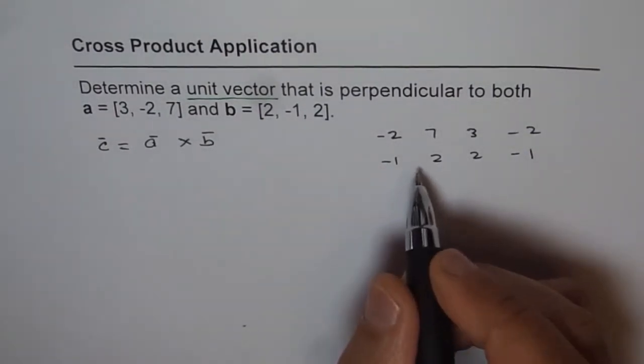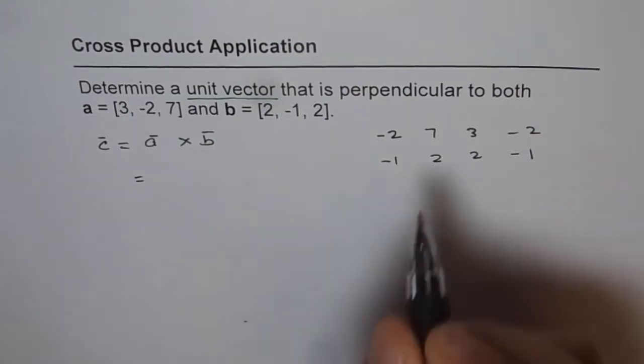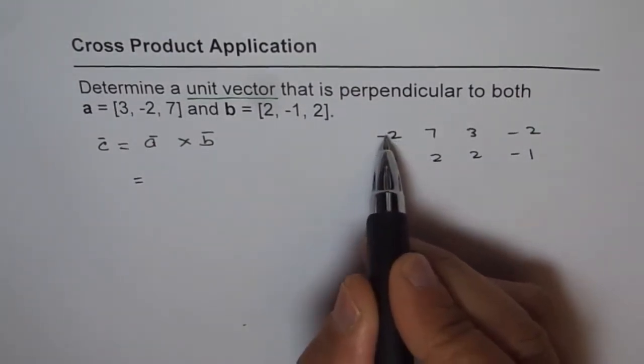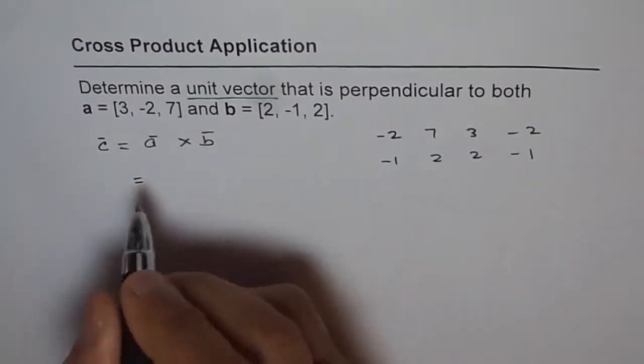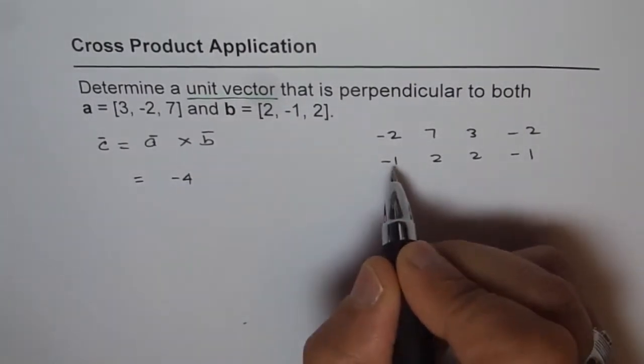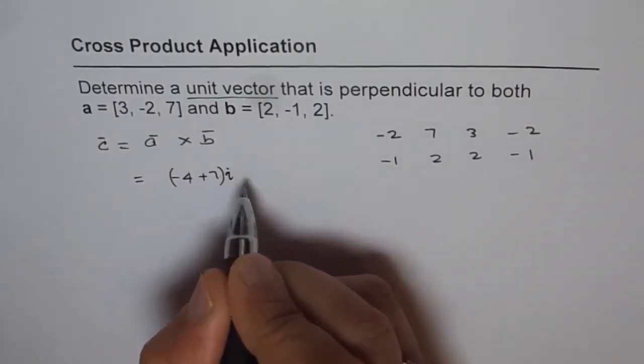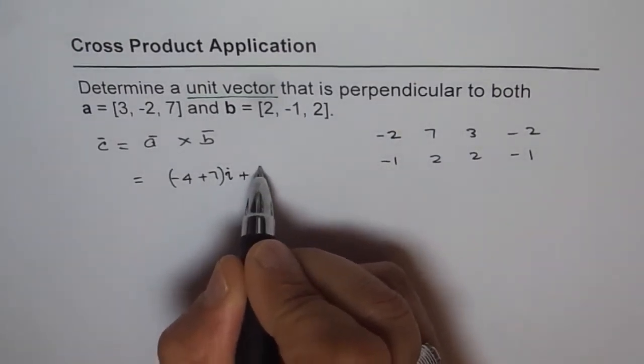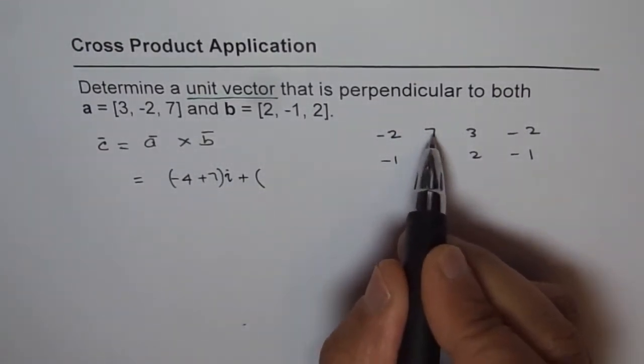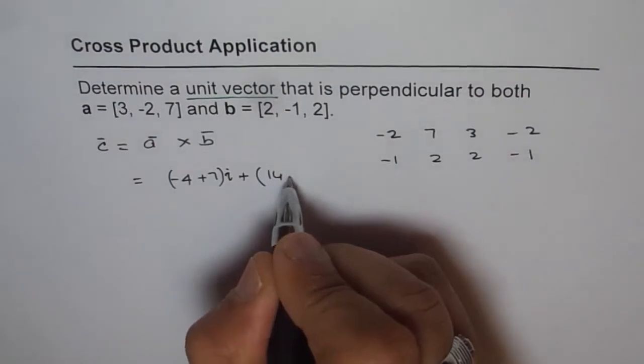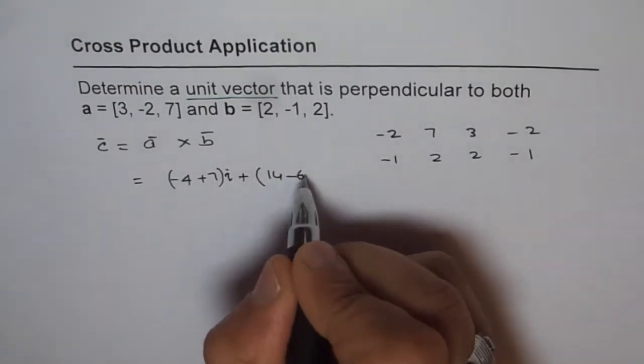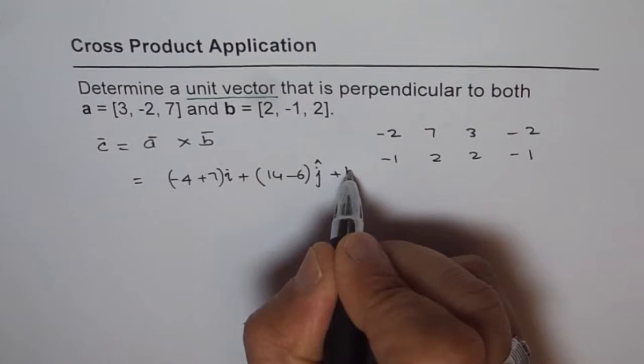And so A cross B is truly equals to, this is the I component, which is this times this, which is minus 4, minus of this, which would be plus 7. And that's the I component. And then we have plus the J component. 7 times 2 is 14, minus 2 times 3 is 6, and we get the J component.